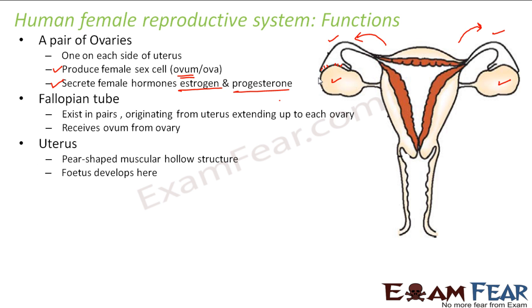Next is the uterus. It is a pear-shaped muscular hollow structure where the fetus develops. As soon as fusion between the male and female cell takes place, a single-celled zygote is formed. That zygote undergoes many divisions to form a multi-celled embryo. A matured embryo with certain features is known as a fetus. The fetus develops in the uterus, remaining there for nine months.